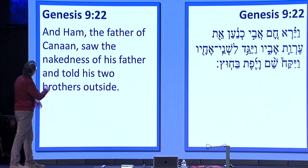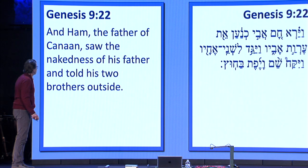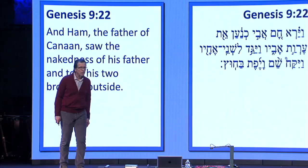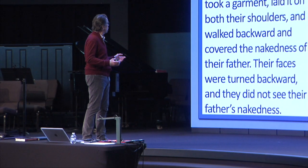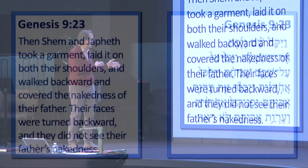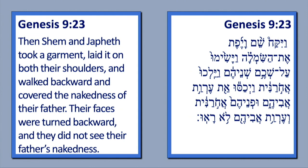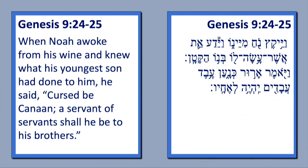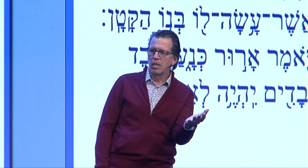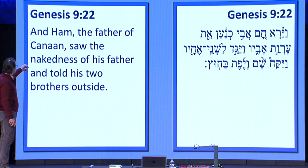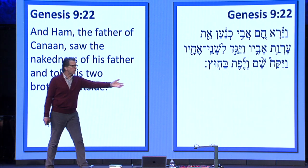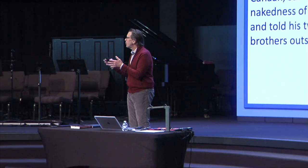Ham, the father of Canaan, saw the nakedness of his dad and told his two brothers outside. Then Shem and Japheth took a garment, laid it on both their shoulders, walked backwards, and covered the nakedness of their father — their faces turned backward so they didn't see their father's nakedness. When Noah awoke and knew what his youngest son had done, he said: 'Cursed be Canaan — a servant of servants shall he be to his brothers.' Do you see how bizarre this is? It seems like it's Noah's fault for lying there naked — only if we're reading it in our 21st-century mindset.